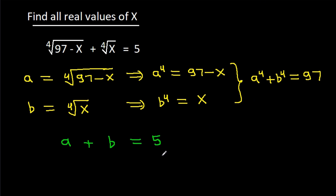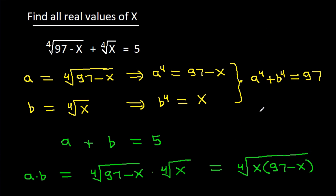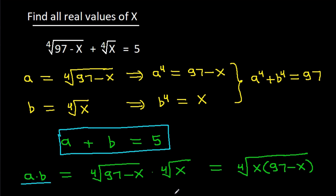And a times b is equal to the 4th root of (97 minus x) times the 4th root of x, which equals the 4th root of x(97 minus x). So we have: a plus b equals 5, ab equals the 4th root of x(97 minus x), and a to the power 4 plus b to the power 4 equals 97.